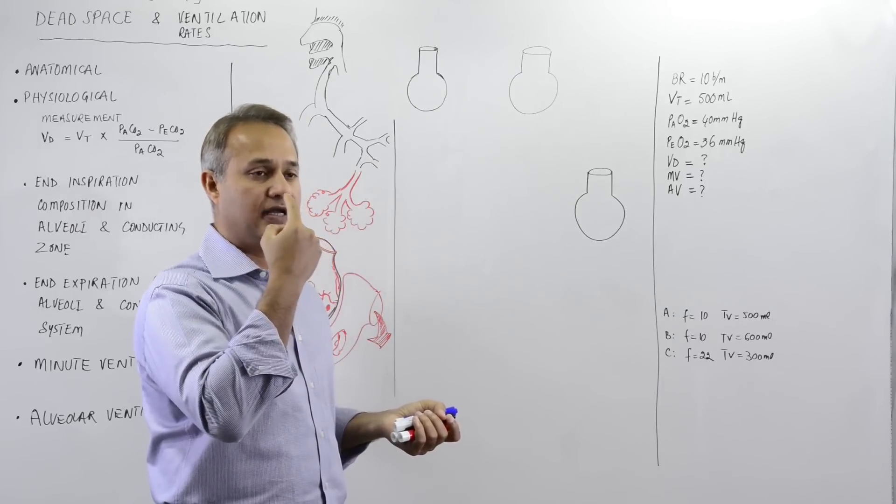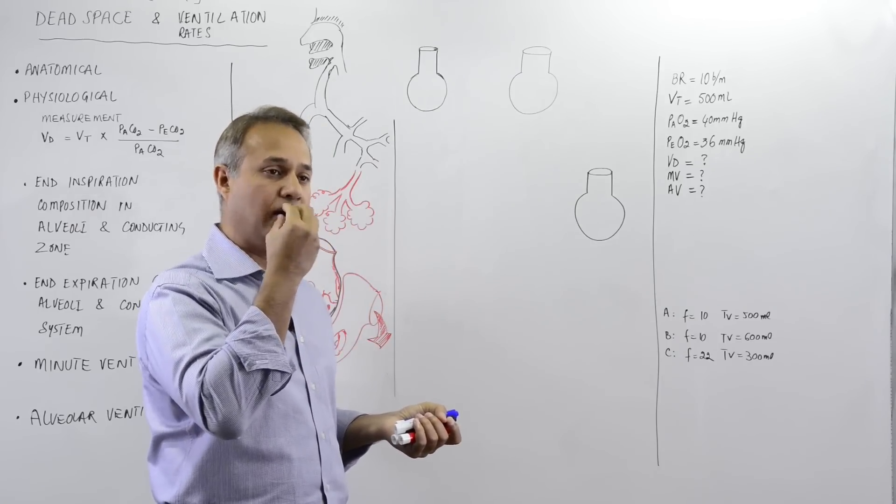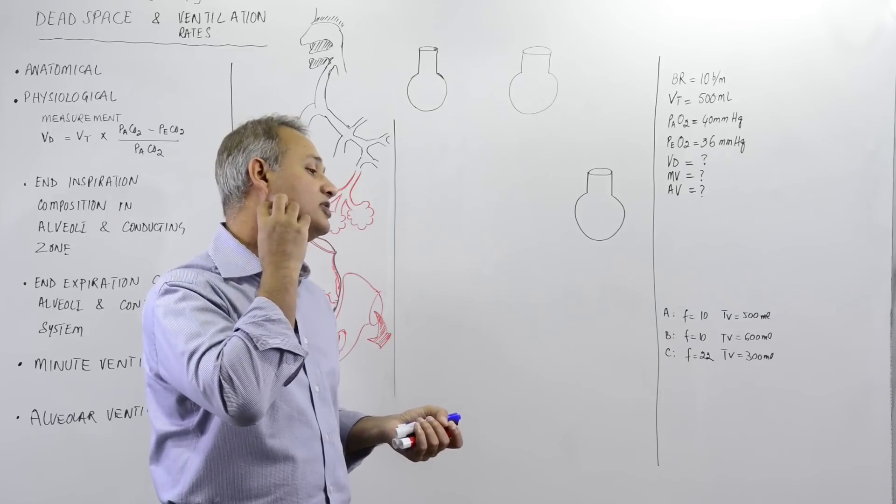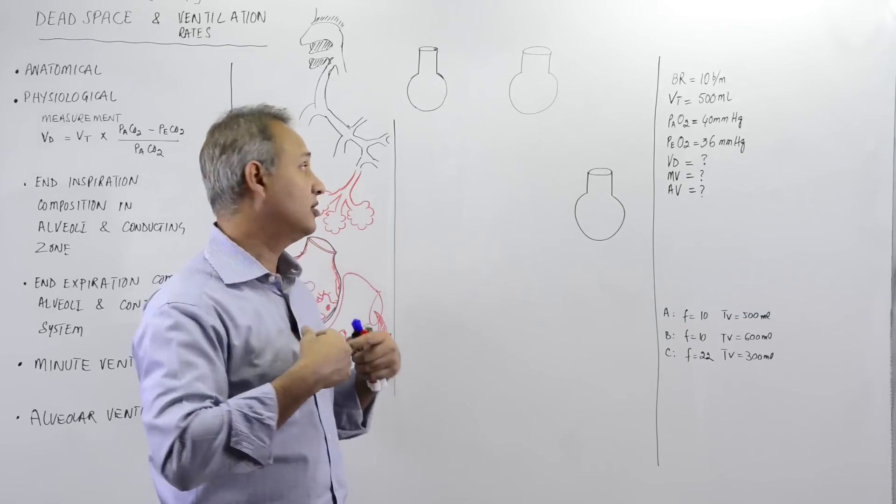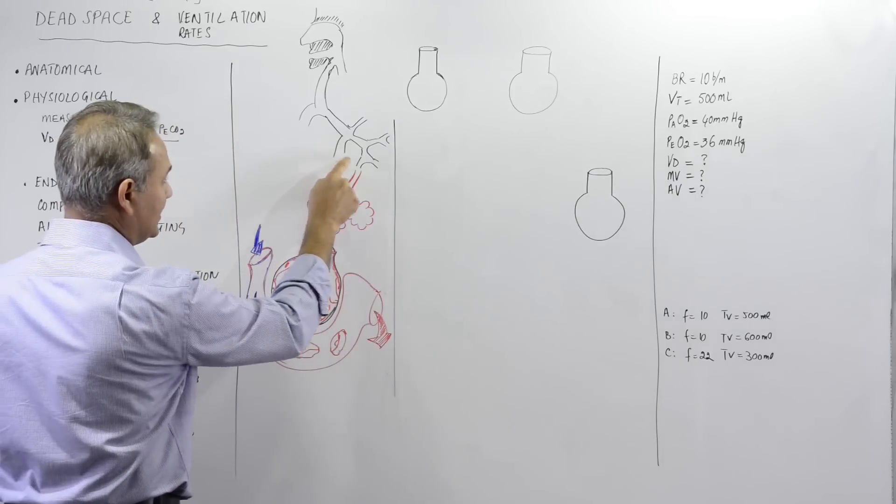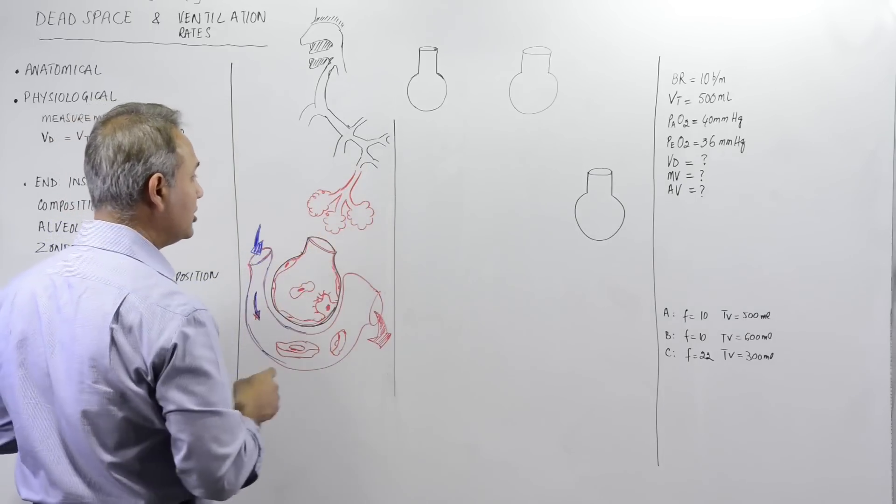They pass through either our nostrils or our mouth from this area, from the pharyngeal area and then from there to the trachea and then bronchi, then all the way down to the bronchioles.